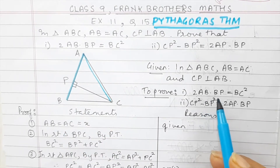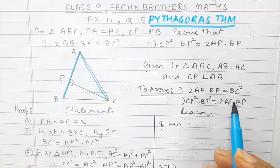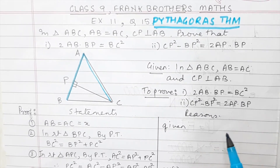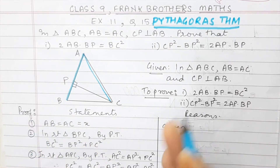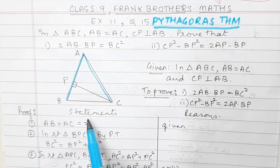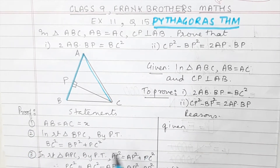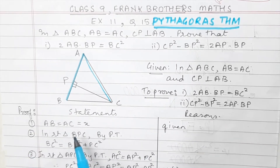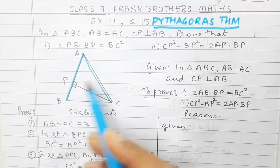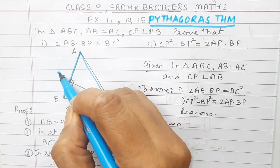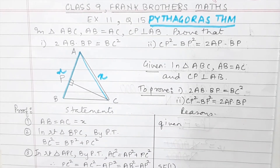Now, prove that 2 AB into BP is equal to BC square. So let us say that you are totally stuck about this. The first thing we can do is divide the page into two halves — we can write the statements, we can write the reasons, we can write the proof. The first thing we'll write is AB equal to AC, and because they are going to be equal, let us call them X and X. This is given.